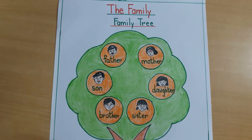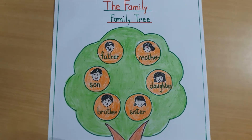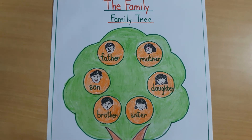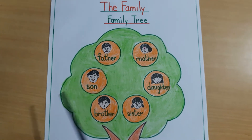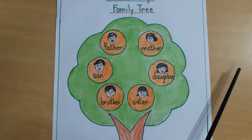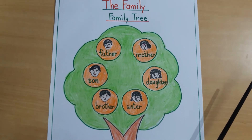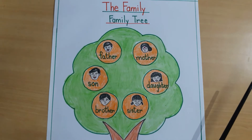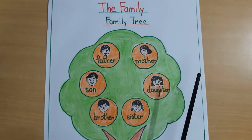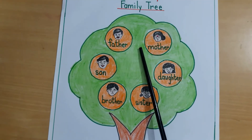Grandfather, grandmother, uncle, auntie, all the kids — when you are together, we call them a big family. In the big family we call mommy, papa, and your brother and sister. Brother and sister are called a small family.